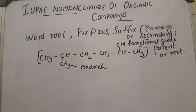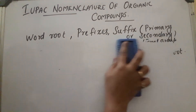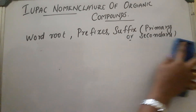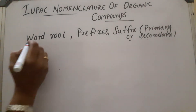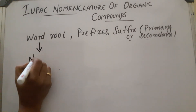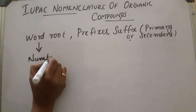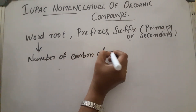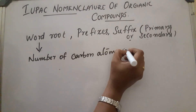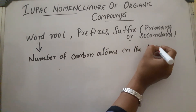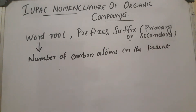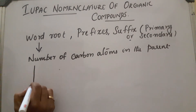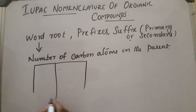What do you mean by word root? Word root means the number of carbon atoms present in the parent chain. Depending upon the length of the parent chain, the word root will vary.